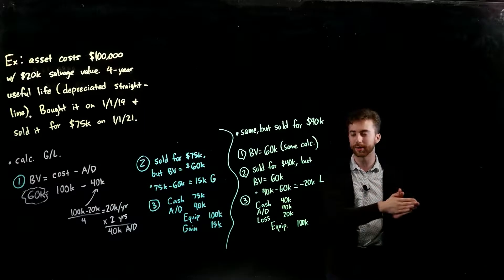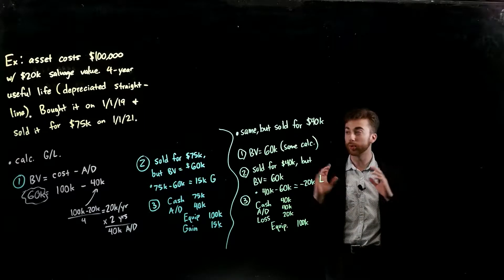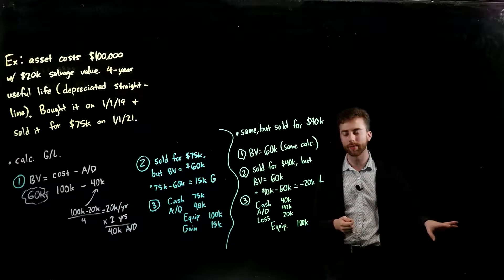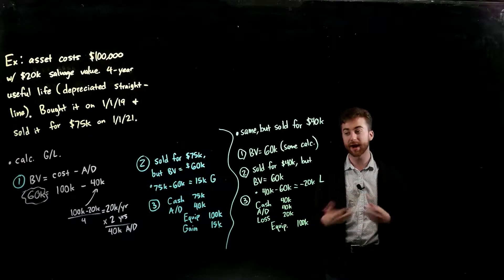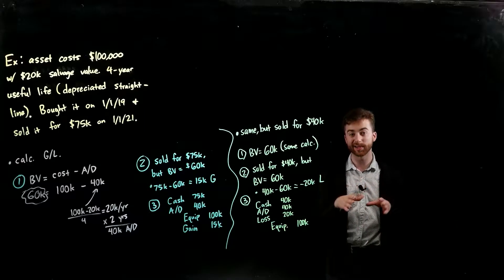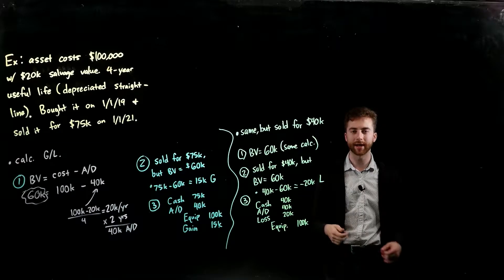Then the equipment is now no longer mine. So it was worth $100,000 - that's what I recorded it on my books originally. So I reduce my equipment account or credit my equipment account by that $100,000. And then finally, because I had a $15,000 gain, gains hold a credit balance, losses hold a debit balance, and thus my plug would be that $15,000 gain right there. So that's a gain example.